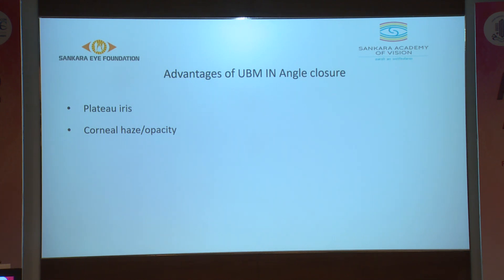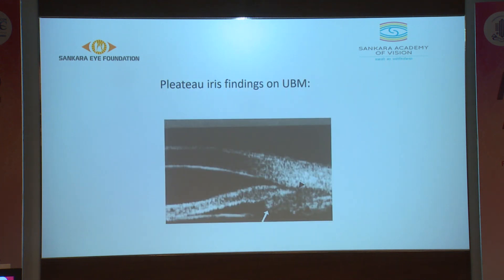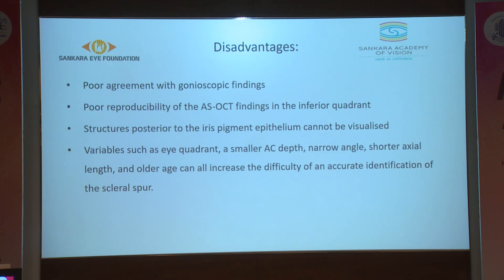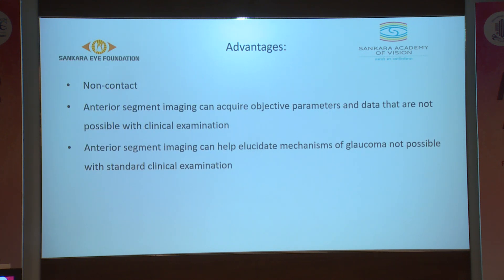ASOCT also provides biometric parameters including angle opening distance, iris thickness, iris curvature, and lens vault. Disadvantages of ASOCT in diagnosing angle closure include poor agreement with gonioscopic findings, poor reproducibility in the inferior quadrant, inability to visualize structures posterior to the iris pigment epithelium, and variables such as eye quadrant, small AC depth, narrow angle, shorter axial length, and older age increasing difficulty of accurate scleral spur identification. Advantages include being non-contact, acquiring objective parameters not possible with clinical examination, and helping elucidate mechanisms of glaucoma not possible with standard clinical examinations.